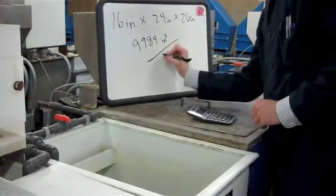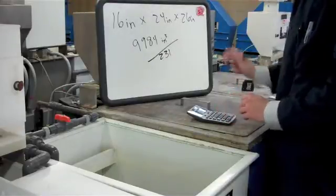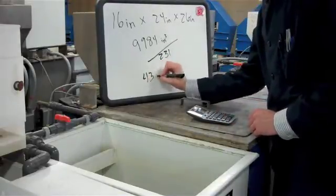And then we're going to convert that to gallons by dividing by 231, which gives us 43 gallons.